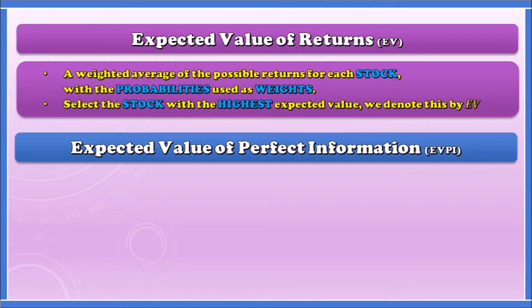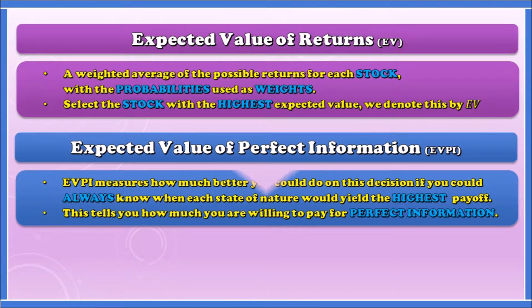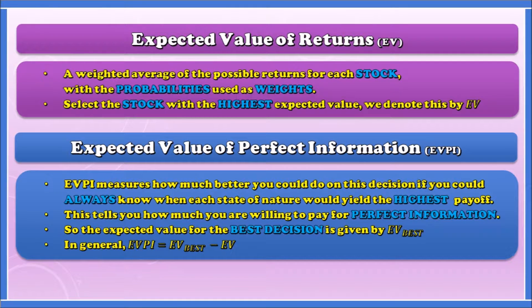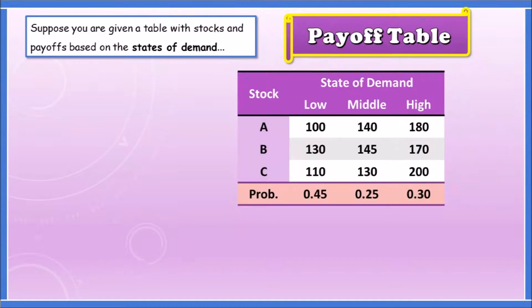The second case: expected value of perfect information, or EVPI. This measures how much better you could do on this decision if you actually knew in advance what state of nature you'd be in. In other words, we want to yield the absolute highest payoff in every case. Knowing each state in advance, we'd select the highest value every time, calculate its expected return, and subtract the best EV under each stock to get the EVPI.